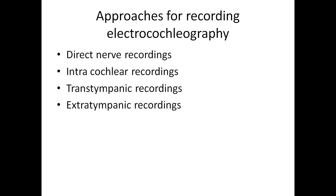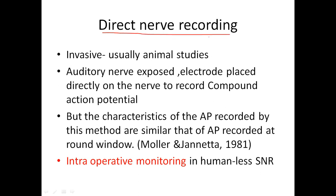Now we are going to record the electrocochleogram. There are different approaches. First approach is direct nerve recording — the name says it is direct nerve, so we need to expose the nerve, which is invasive and not ethical for human populations. Usually it is done in animal studies. Here the nerve is exposed, the electrode is placed directly on the nerve. Even though we have different approaches, the characteristics of the AP recorded by this method are similar to that recorded at the round window. Intraoperative monitoring uses this approach, and it provides good signal-to-noise ratio for monitoring cochlear nerve function during surgery.